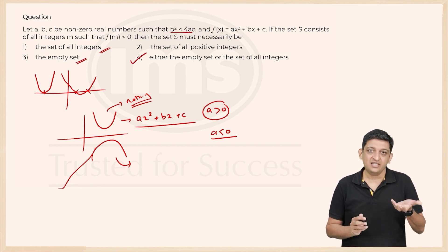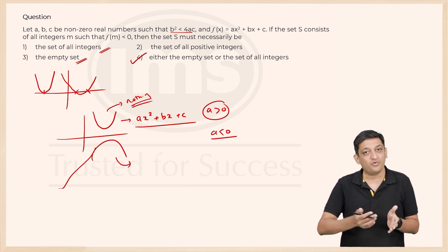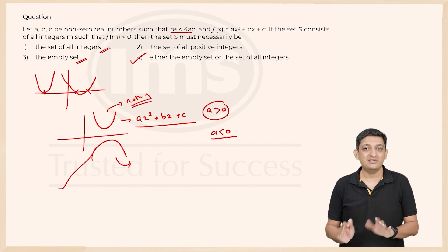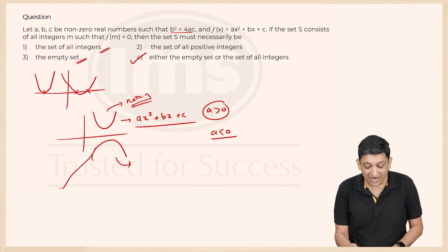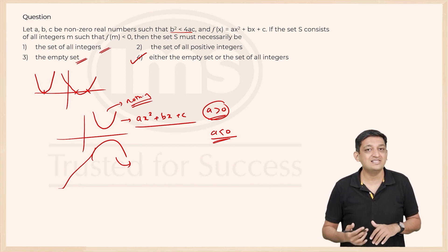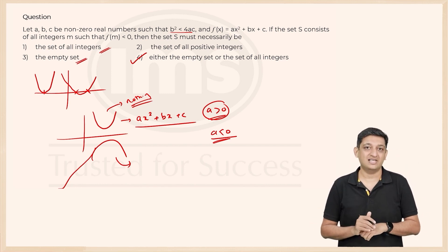It will either be an empty set which is above the x-axis, or the set of all integers which will be below the x-axis. So it was a very nice trap that was set into this particular question, and you had to remember these two cases where a would be greater than 0 above the x-axis, a less than 0 completely below the x-axis.